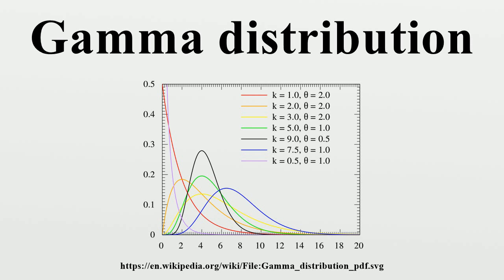Properties: Skewness. The skewness depends only on the shape parameter and approaches a normal distribution when k is large. Median calculation: unlike the mode and the mean, which have readily calculable formulas based on the parameters, the median does not have an easy closed form equation. The median is defined as the value ν such that a formula for approximating the median for any gamma distribution, when the mean is known, has been derived based on the fact that the ratio μ/ν is approximately a linear function of k when k ≥ 1.